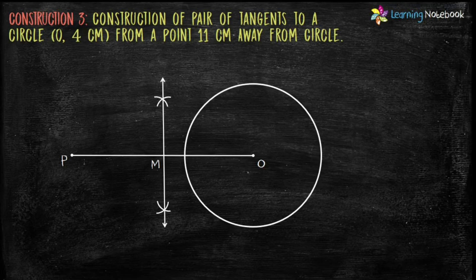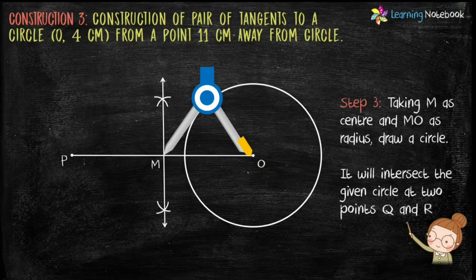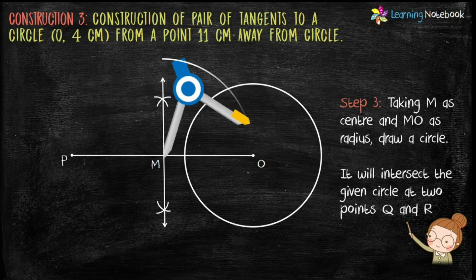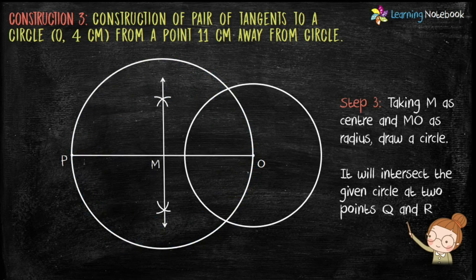Step 3 is take M as center and MO as radius, draw a circle. It will intersect the given circle at two points. Name them as Q and R.